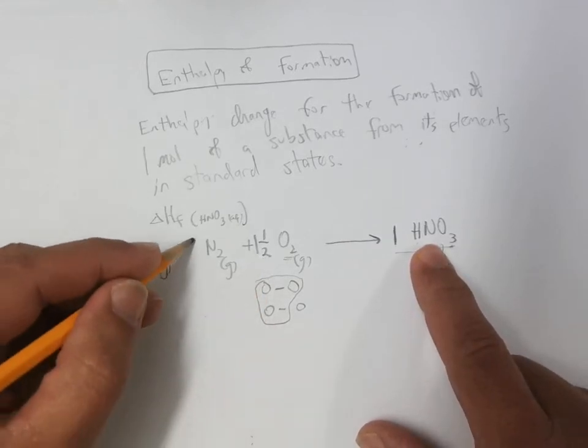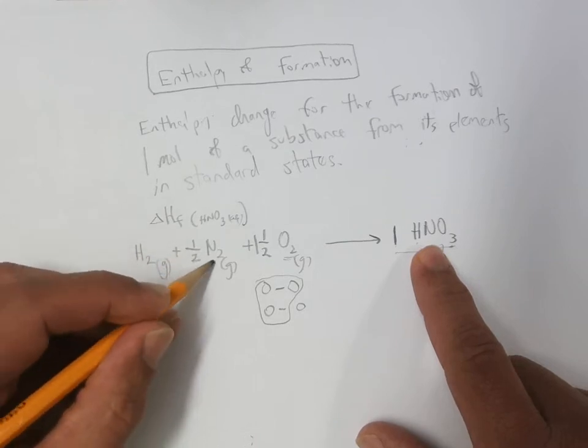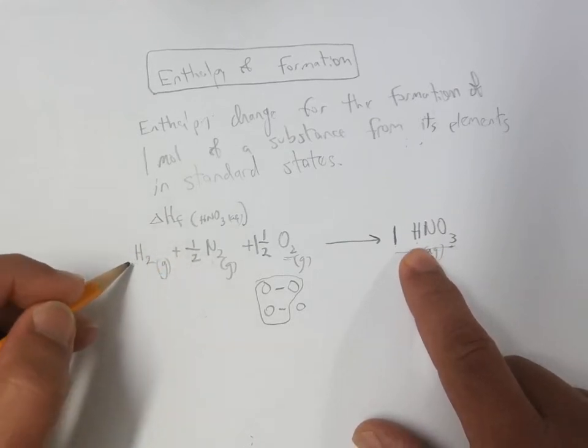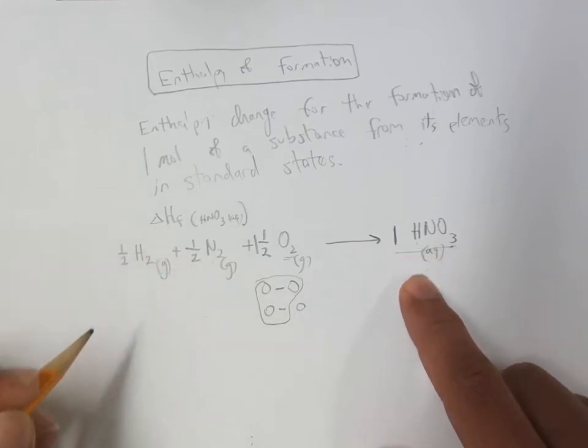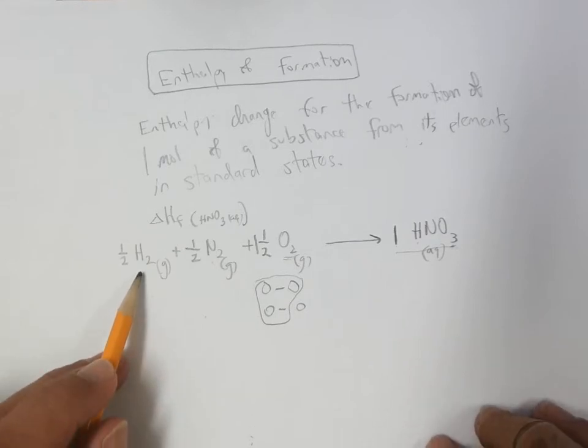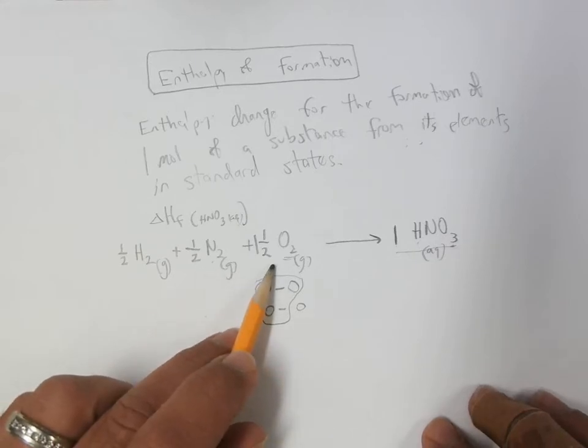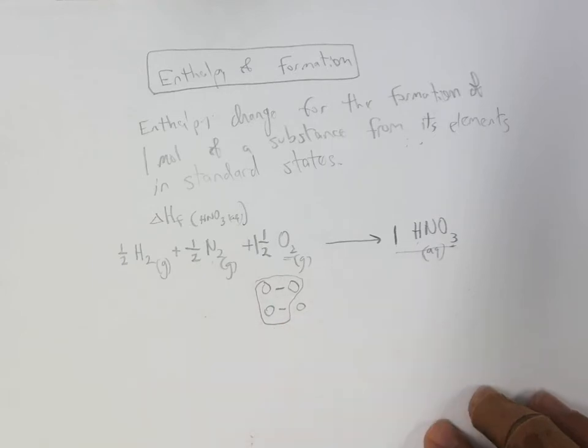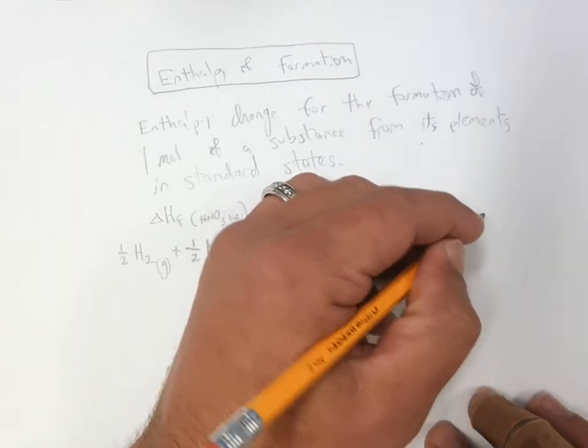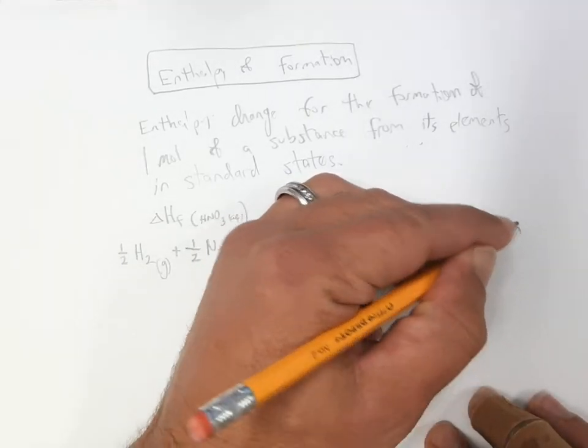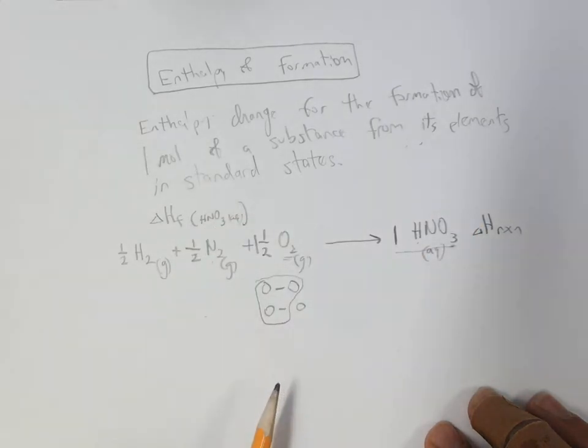Likewise, if you need one nitrogen atom, you need a half of a nitrogen molecule, one hydrogen atom, one half of a hydrogen molecule. So one half mole of hydrogen plus one half mole of nitrogen plus three halves moles of oxygen to give one mole of nitric acid. And whatever the delta H for this reaction is would be the heat of formation for nitric acid.